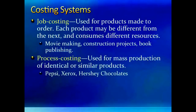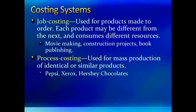A process costing system, on the other hand, is used by companies that do mass production of a single product where units are indistinguishable from any other unit. A company that makes shampoo, cold drinks, candy, paper, or paint makes millions of identical units of the same product and needs to know only the average cost of each unit rather than the exact cost of each particular piece. In this chapter we will be focusing on job costing — the costing system for all companies that need to track cost for each job separately.